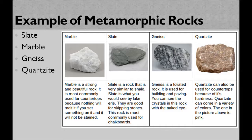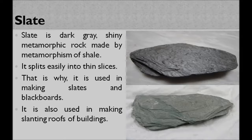Now, first is slate. Slate is a dark grey, shiny metamorphic rock made by metamorphism of shale. Slate is dark grey in colour and is a shiny metamorphic rock.